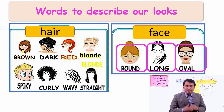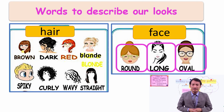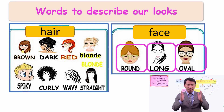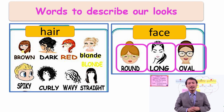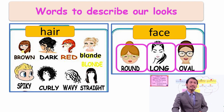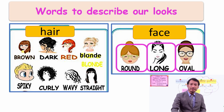Another type of face is oval. Oval means like the shape of an egg. Another way of describing people, or another side of describing people, is from their hair. So what kind of hair do they have?